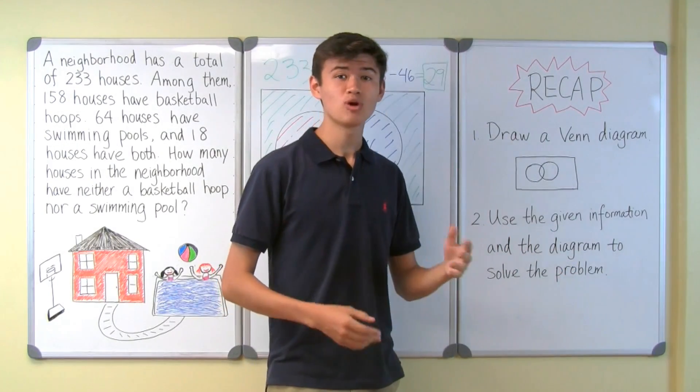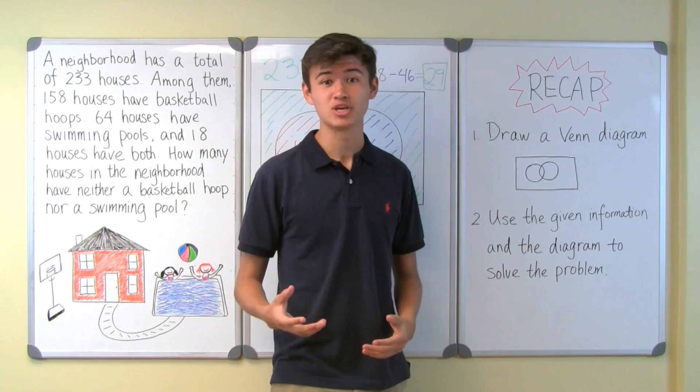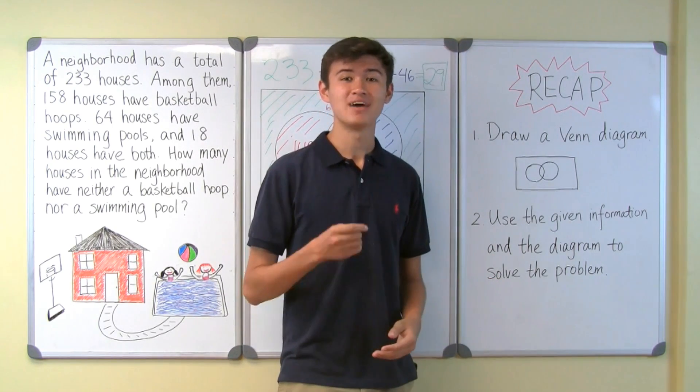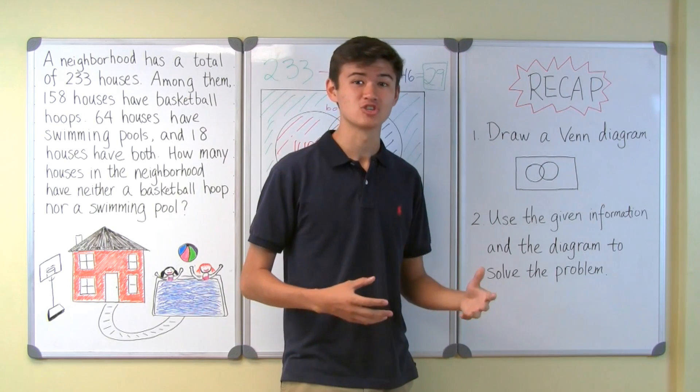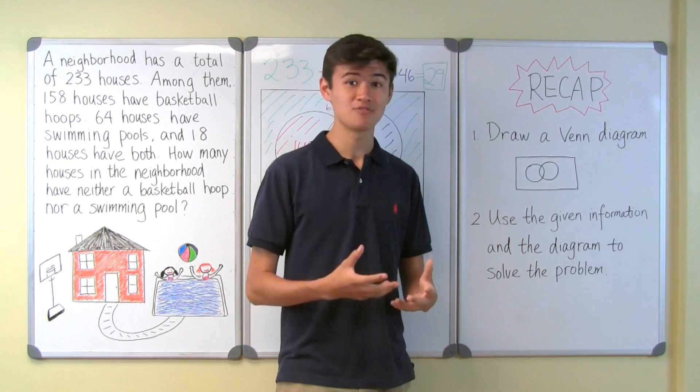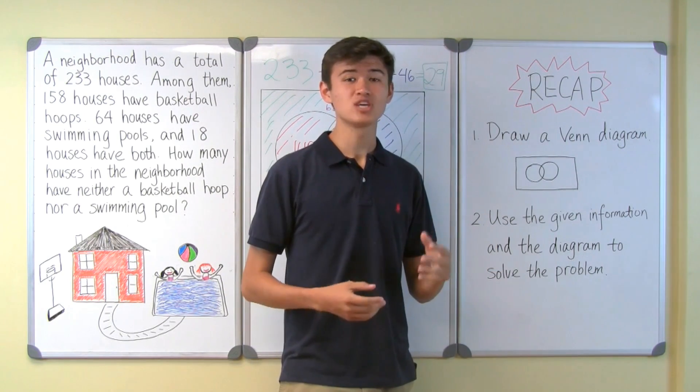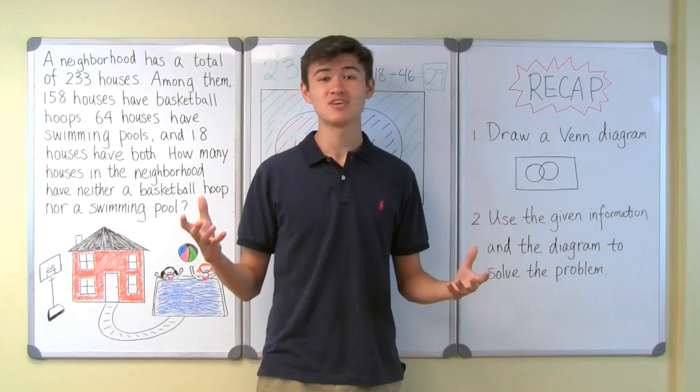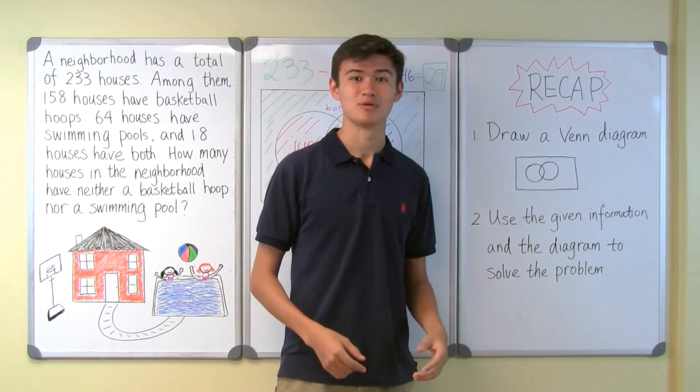Let's recap. When we run into a problem with groups of objects with shared members, a Venn diagram can be used to illustrate the relationship of these groups. Then we can use this diagram and the given information to solve the problem.